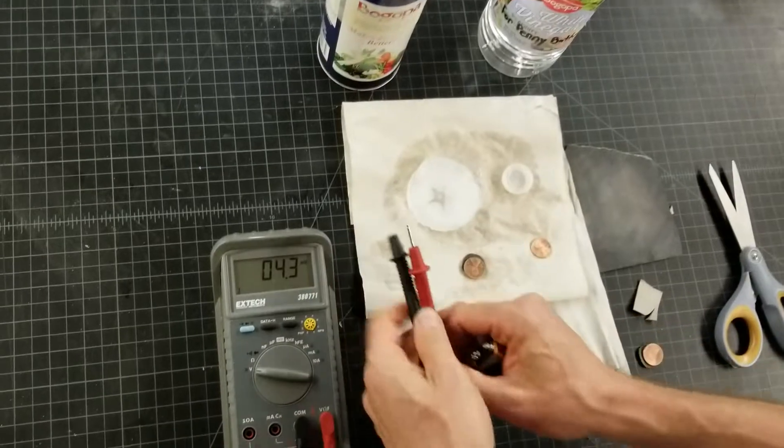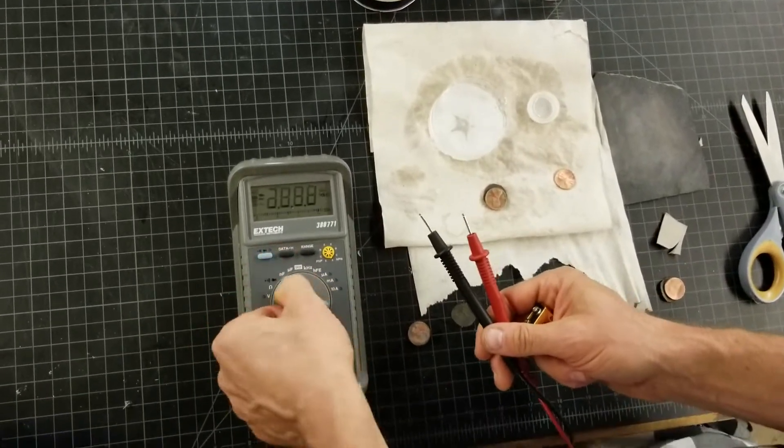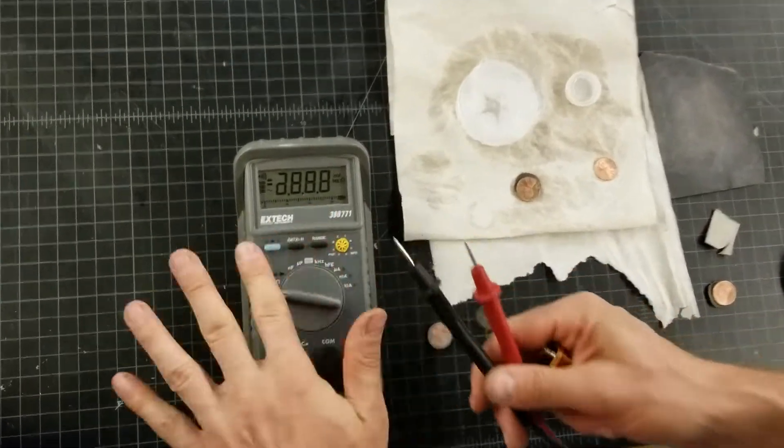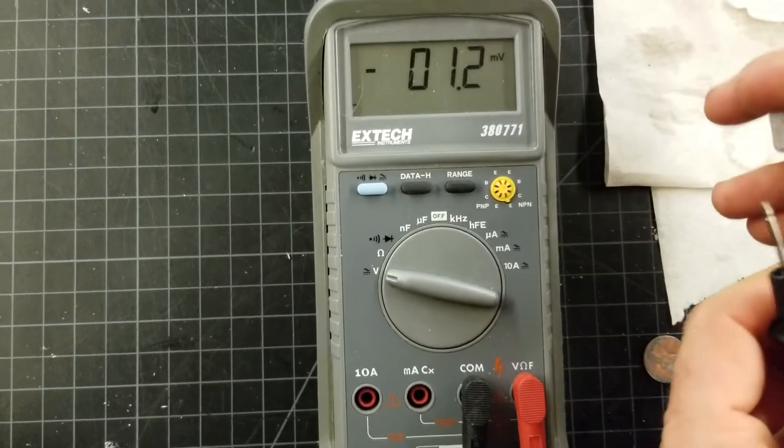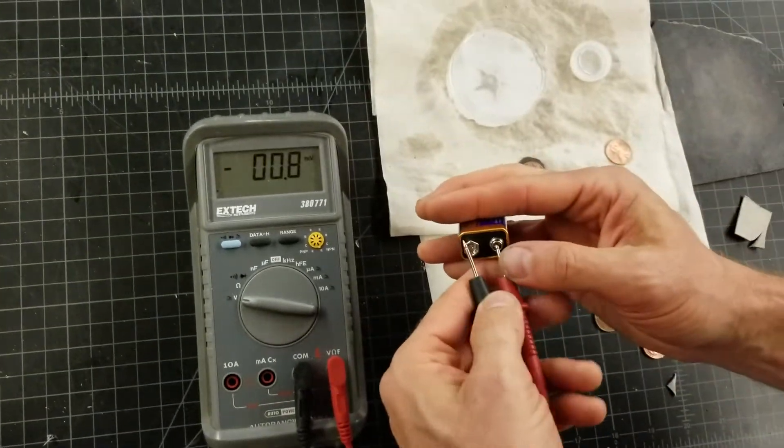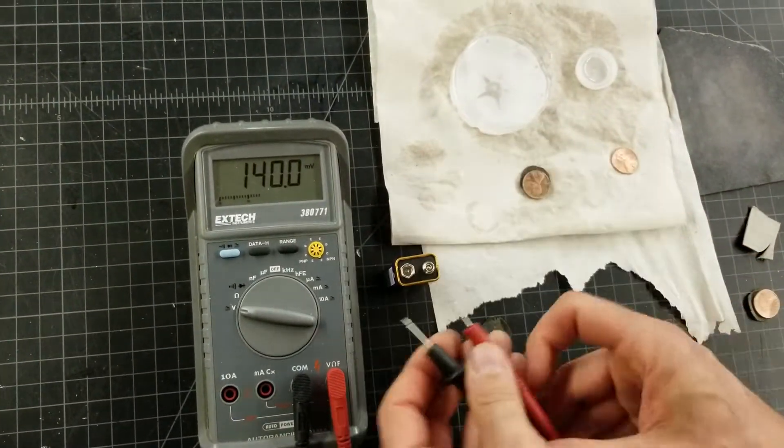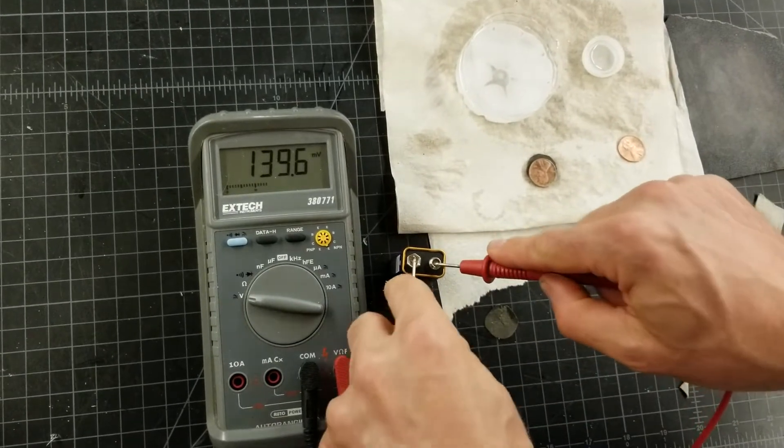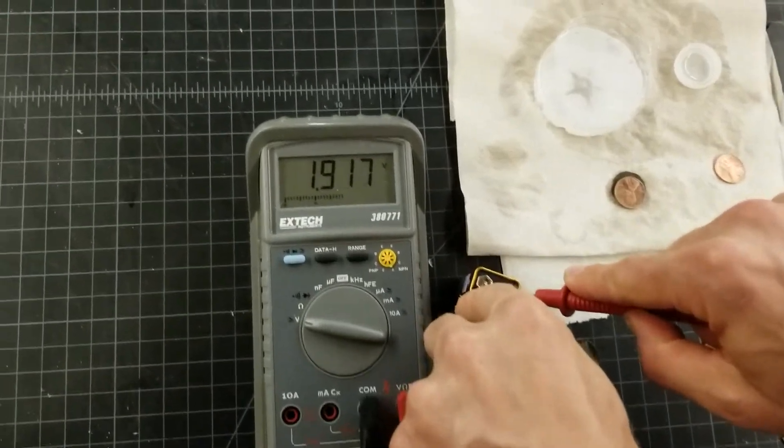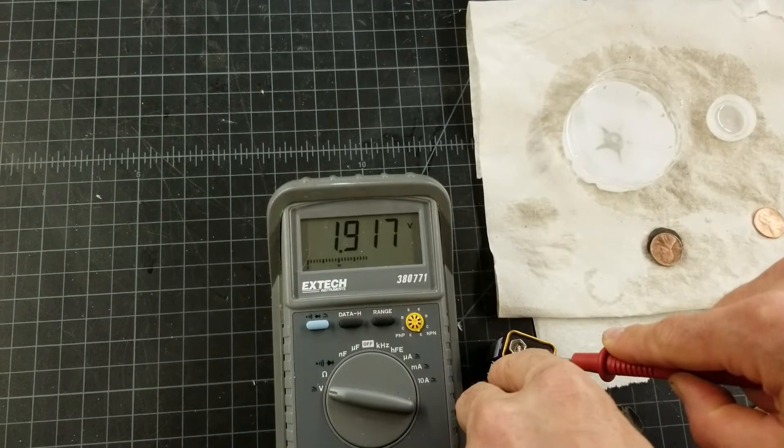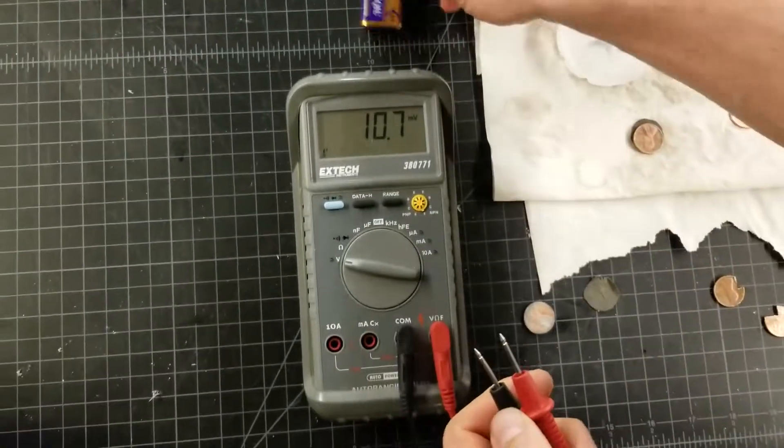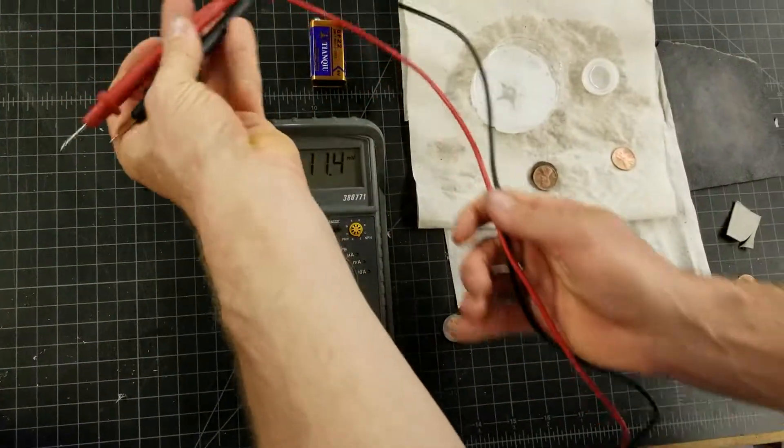And just to show you how the voltmeter works, you click it over to volts. This one does AC or DC. This is a 9-volt battery that I already know is close to dead. But if you just check it, this is 1.9. This is basically a dead battery. But that's basically how it works.